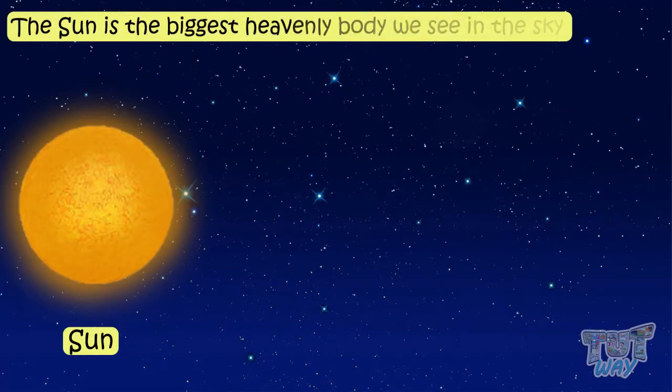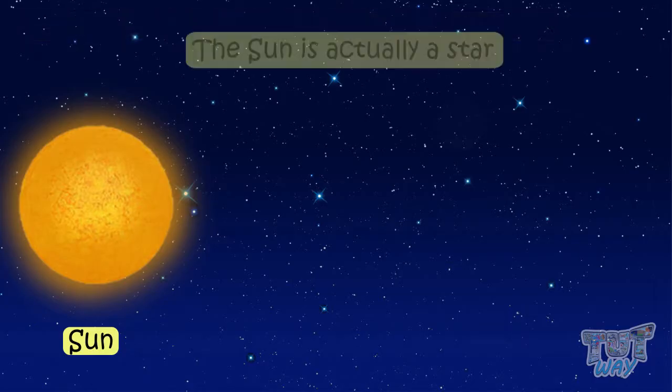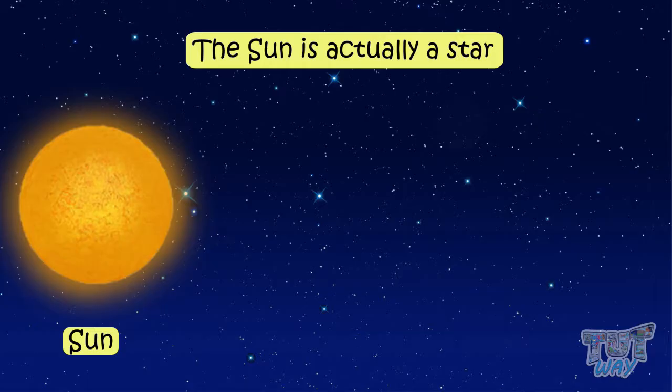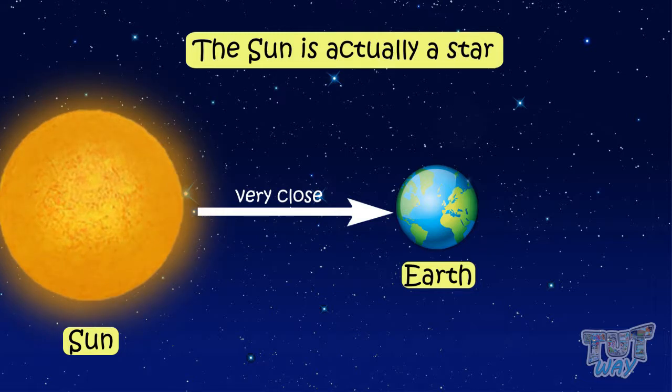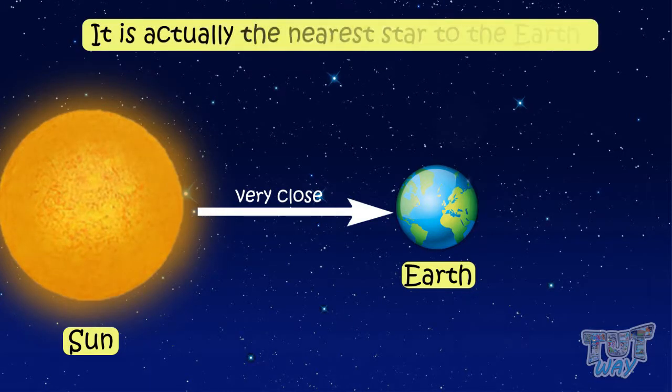The sun is the biggest heavenly body we see in our sky. The sun is actually a star, but it's very, very close to earth as compared to stars we see at night. So it seems so much bigger than the stars. It is actually the nearest star to earth and we call it sun.